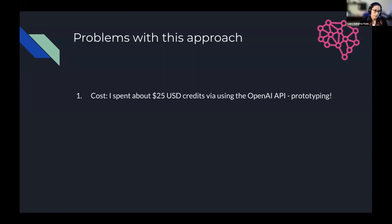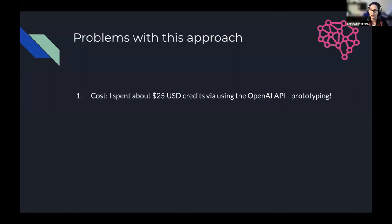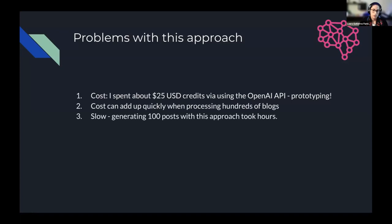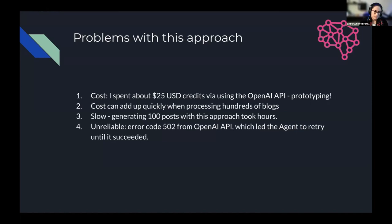I ran into a few problems when I tried this. The first was it cost me about $25 via the OpenAI API just with prototyping and running the script across the different blog posts — which could be solved by using an open source library instead. I also noticed that when using LangChain on its own, it took several hours for the content to be parsed, because it receives the instruction, has a thought, generates a result, then has another thought and computes the next result. Also, when iterating through the pages, I sometimes got a 502 error from the OpenAI API, which led the agent to retry until it succeeded — and I'm not sure if I was charged every time it failed.